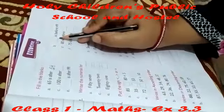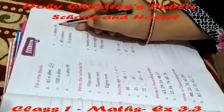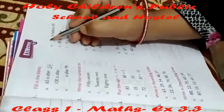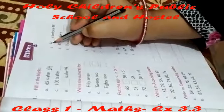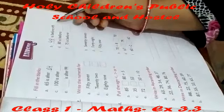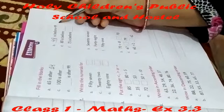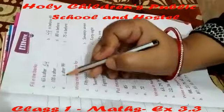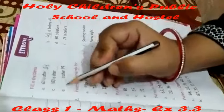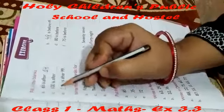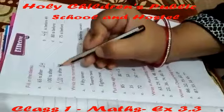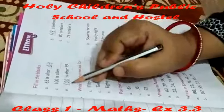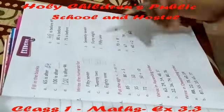Next, blank is before 49. Which number comes before 49? 48 is before 49. Next, blank is after 99. 100 is after 99. 100 comes just after 99.